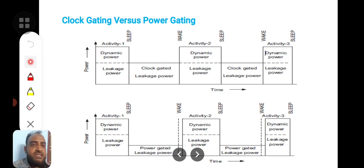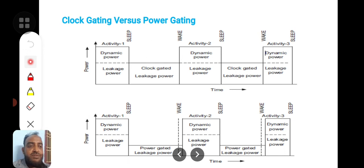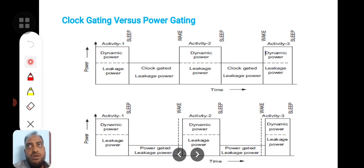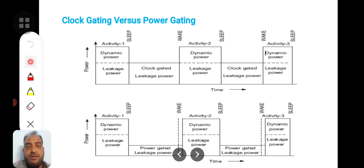Of course, clock gating will be there, and along with clock gating we will also have power gating. How do we do power gating? As we have discussed in the previous video lecture, like MTCMOS, we will have two transistors — one at the header and another at the footer. The low threshold voltage circuit will be used to have high speed, that is low-delay activity.